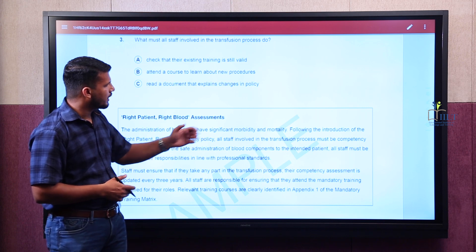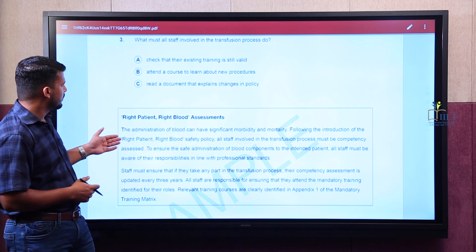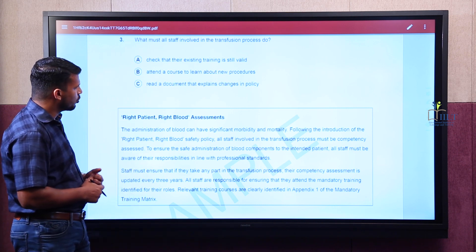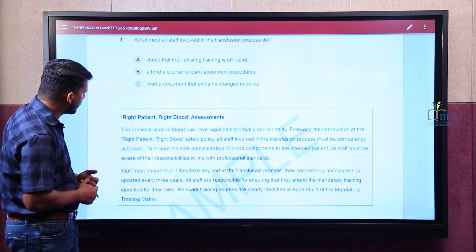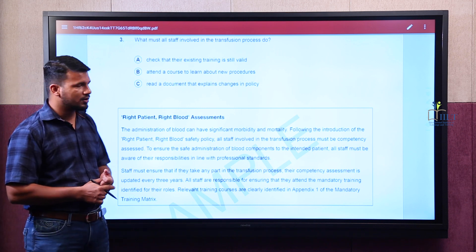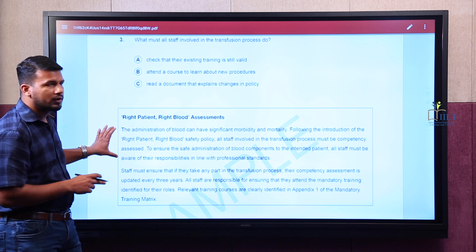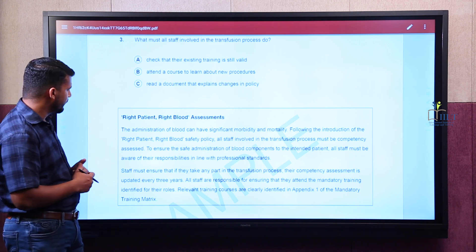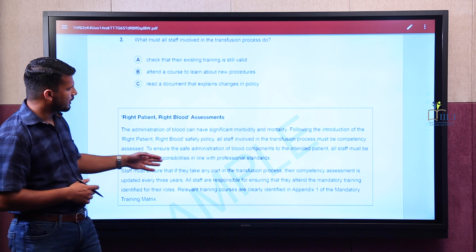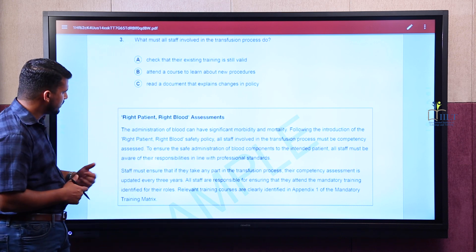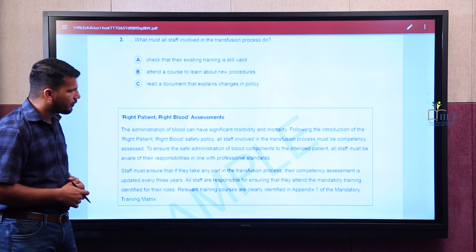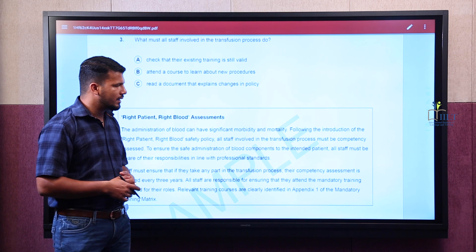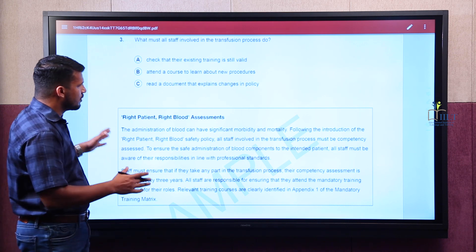The extract reads: 'The administration of blood can have significant morbidity and mortality. Following the introduction of the Right Patient Right Blood safety policy, all staff involved in the transfusion process must be competency assessed. To ensure the safe administration of blood components to the intended patient, all staff must be aware of their responsibilities in line with professional standards. Staff must ensure that if they take any part in the transfusion process, their competency assessment is updated every three years. All staff are responsible for ensuring that they attend the mandatory training identified for their roles. Relevant training courses are clearly identified in Appendix 1 of the mandatory training matrix.'